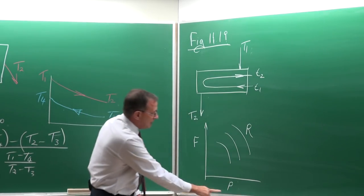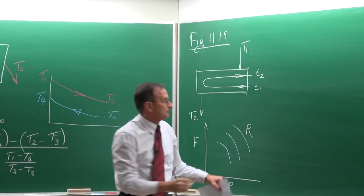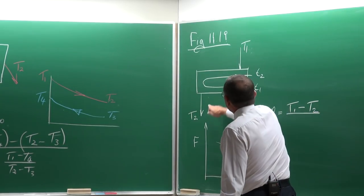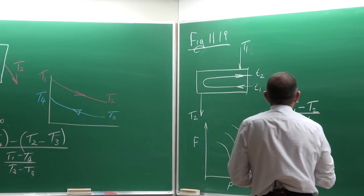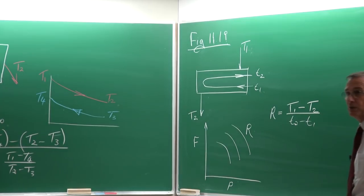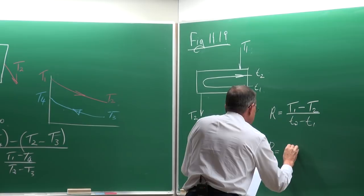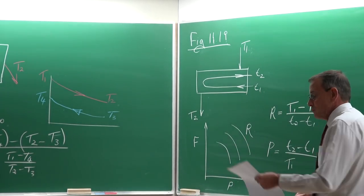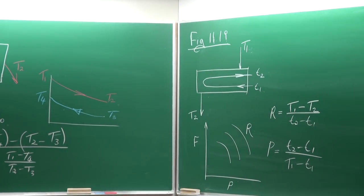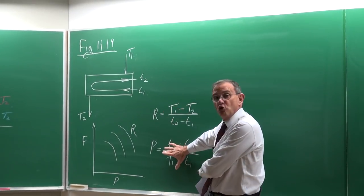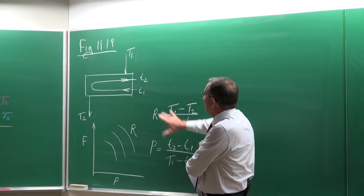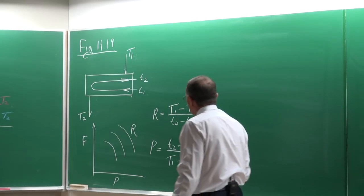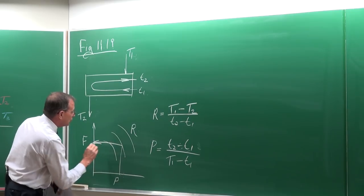Just go and look at the sketch and the graph — the graph shows the values of P and R. For this specific case, R equals capital T1 minus T2, divided by lowercase t2 minus t1 (outlet minus inlet temperature of the tube side). P equals lowercase t2 minus t1, divided by capital T1 minus lowercase t1. Once you have P and R, it is very easy to read off the correction factor from the graph.